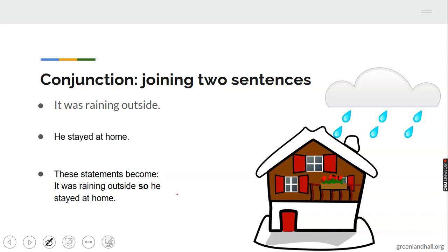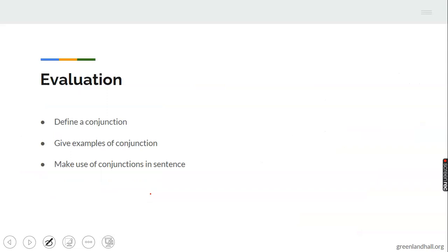Another example of joining two sentences: 'It was raining outside' and 'He stayed at home.' Joining these two sentences together it becomes: 'It was raining outside, so he stayed at home.' The conjunction there is 'so,' which joined the two sentences together. I believe you understood what a conjunction is. You should be able to define the conjunction, give examples, and make use of conjunction in a sentence or identify them. Thank you for listening, and bye for now.